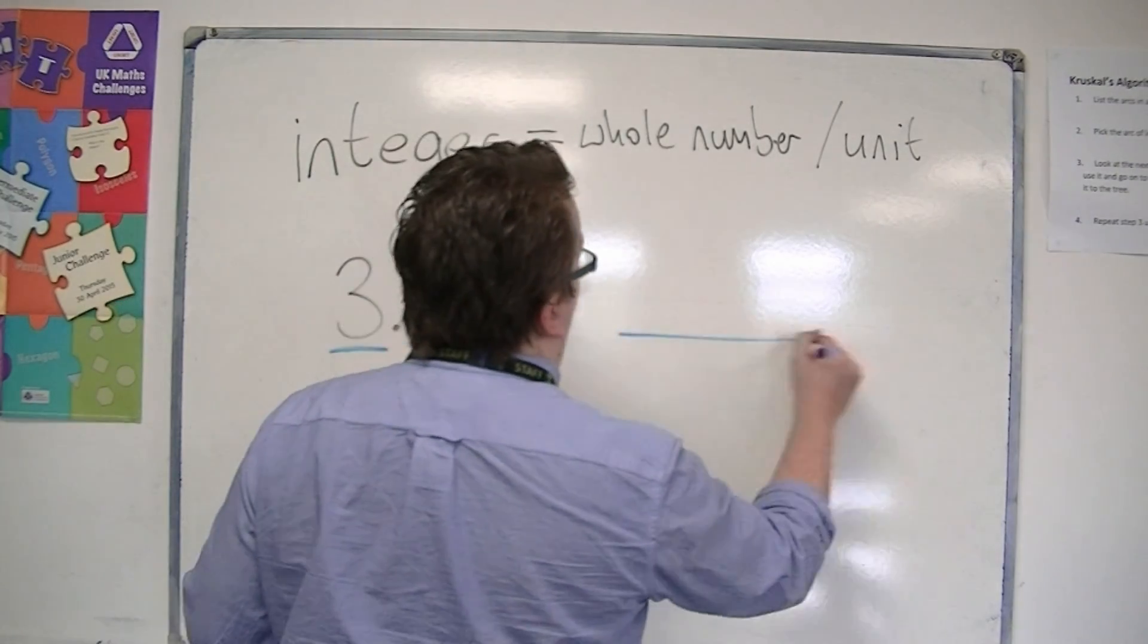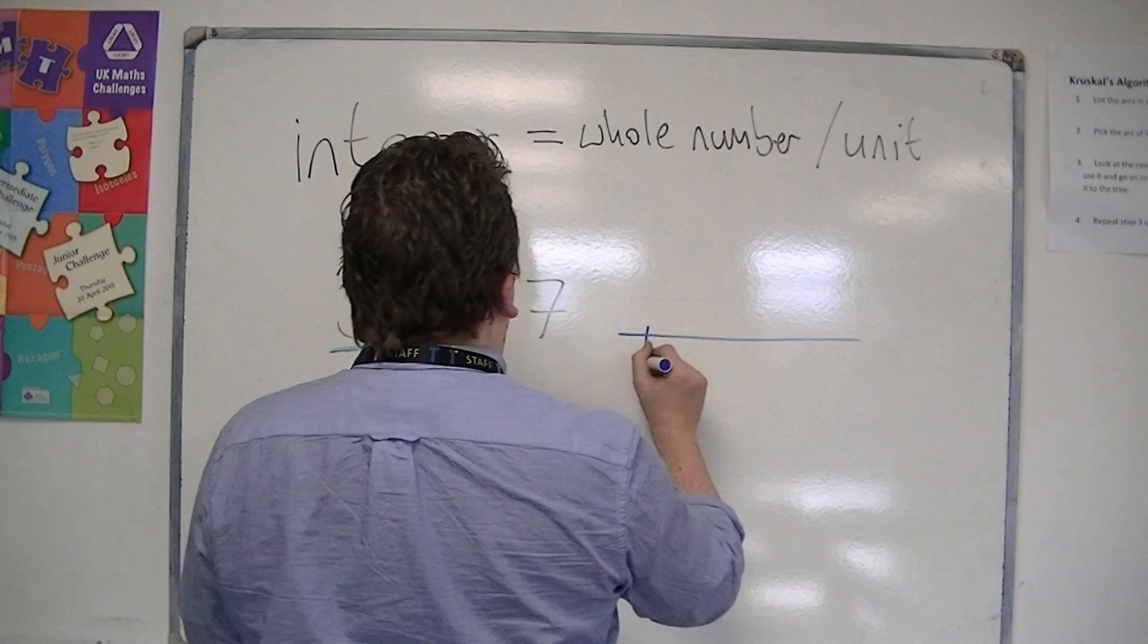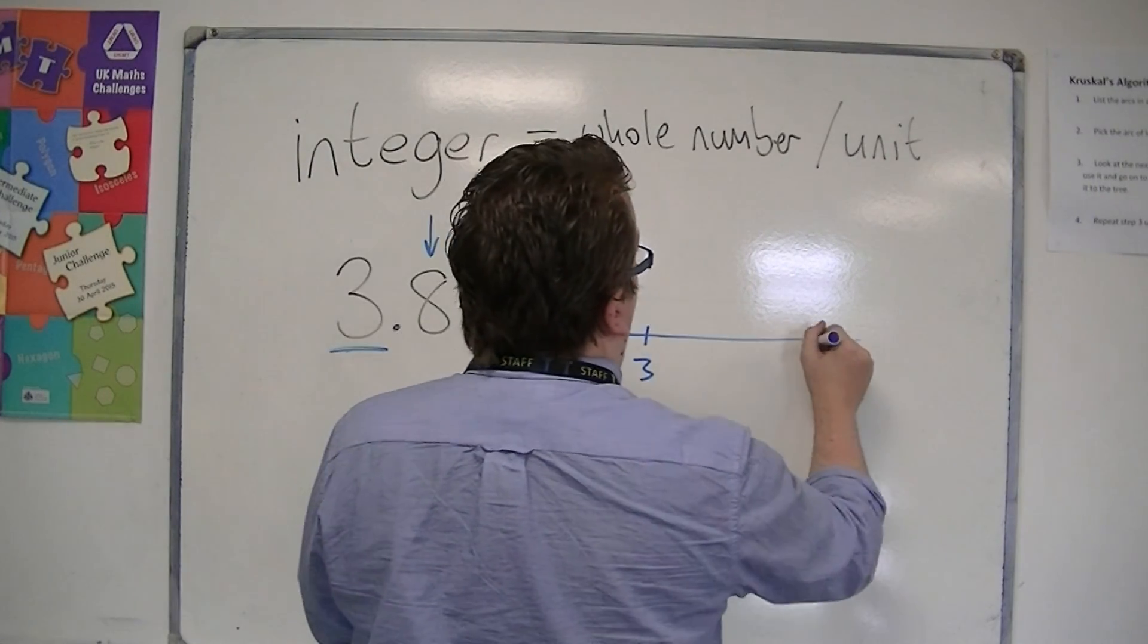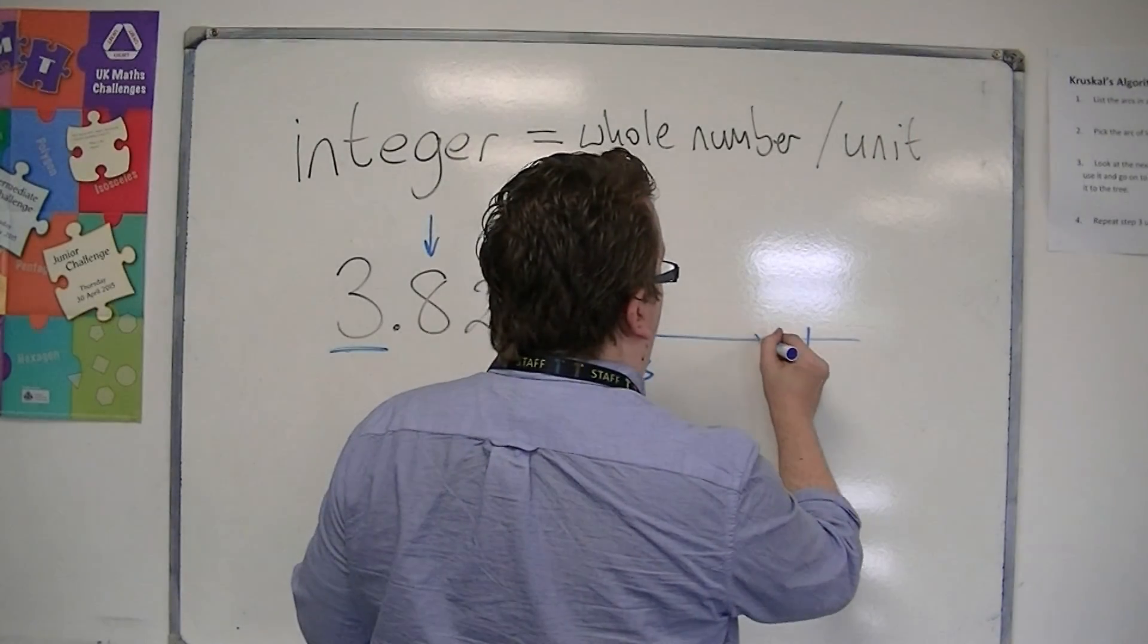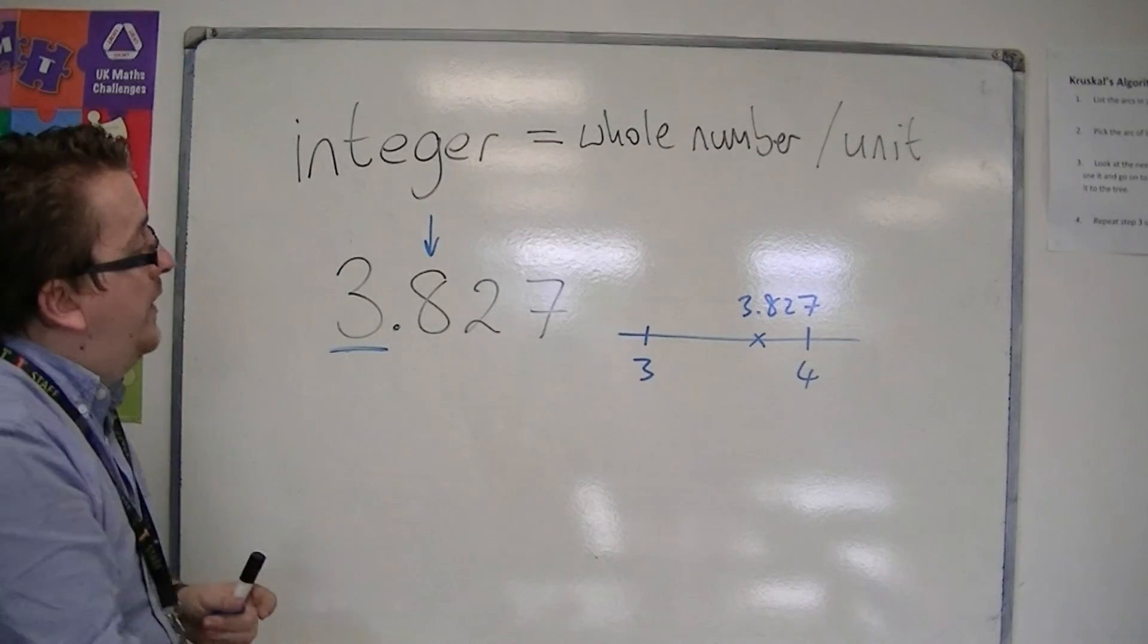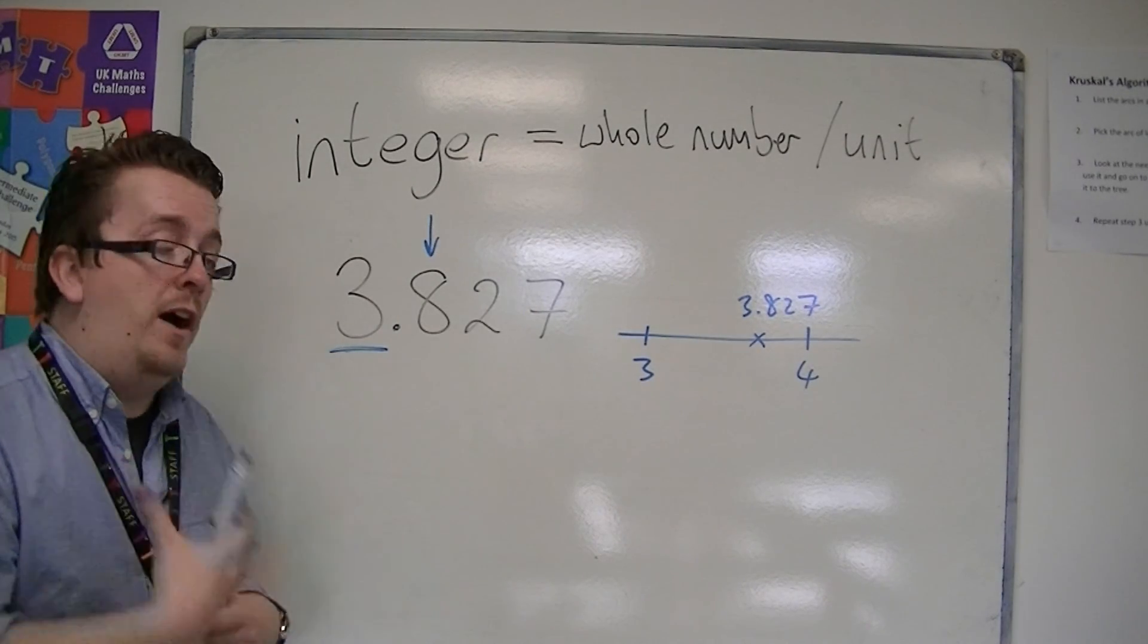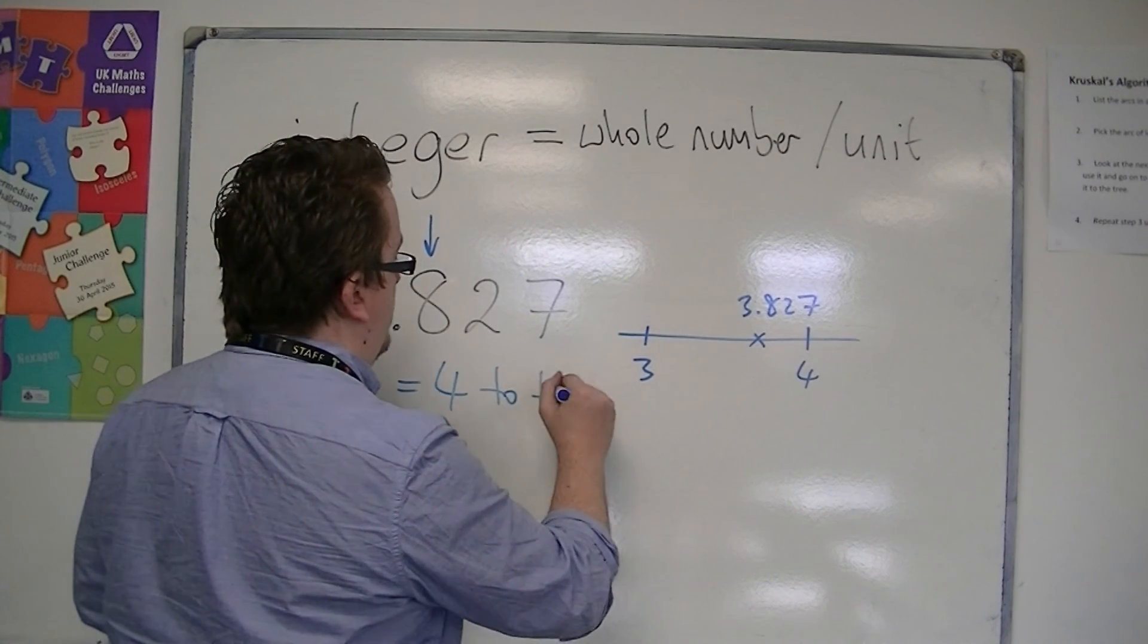Effectively, I've split my number line up into units. I have 2, 3, 4, 5, 6, 7, etc. And 3.827 is roughly about here. That 8 is telling me that I need to round up, so I would round this to 4 to the nearest integer.